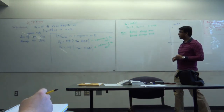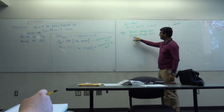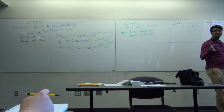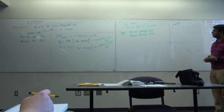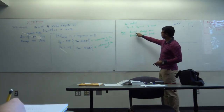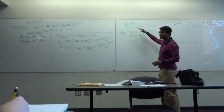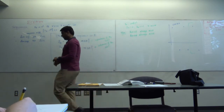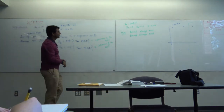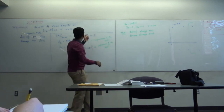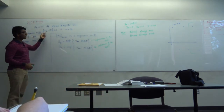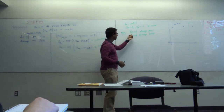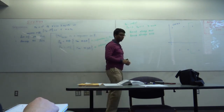The theorem is: liminf always exists and limsup always exists. Of course, liminf could be negative infinity and limsup could be positive infinity—those are all allowed, so you could have divergence to infinity. But in contrast with a general sequence where the limit may not exist at all, liminf and limsup always exist.